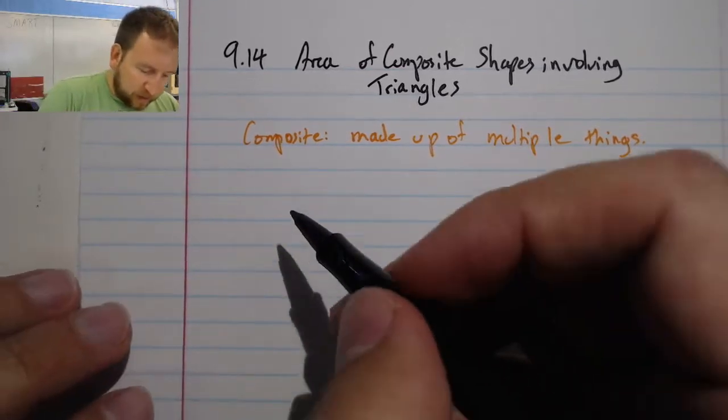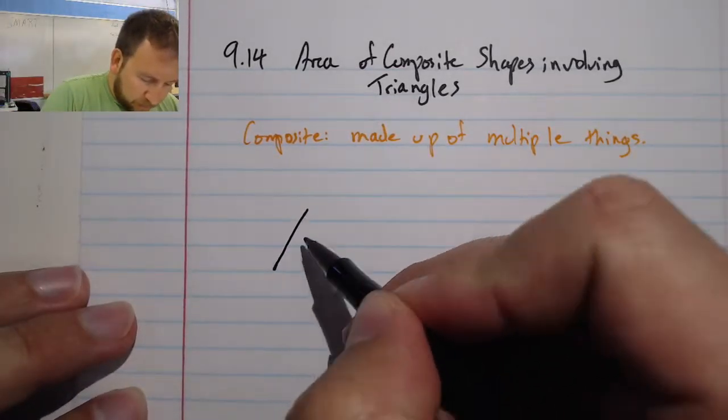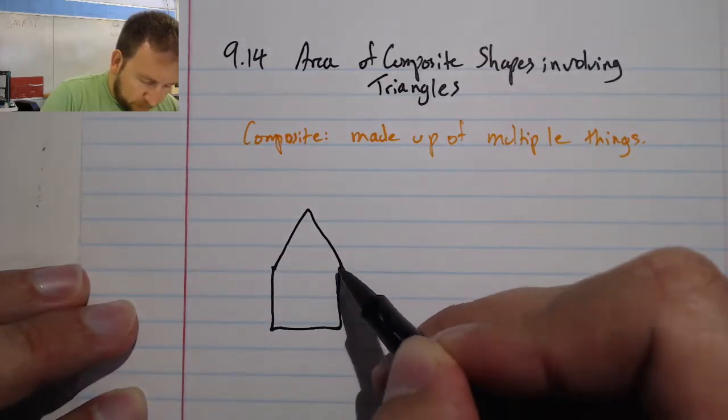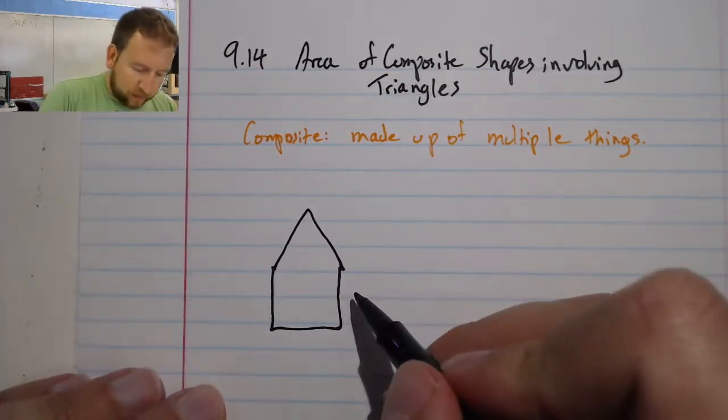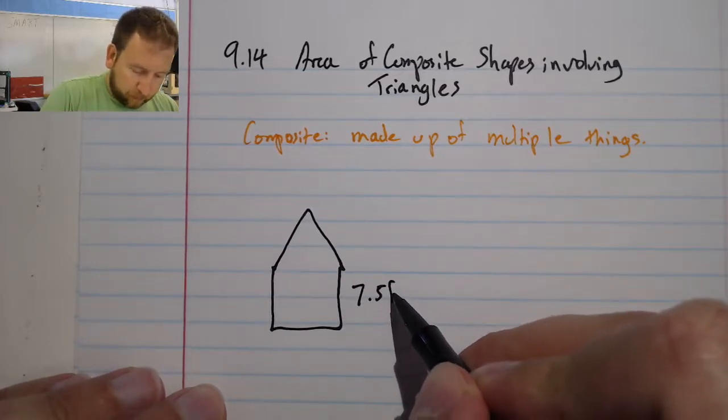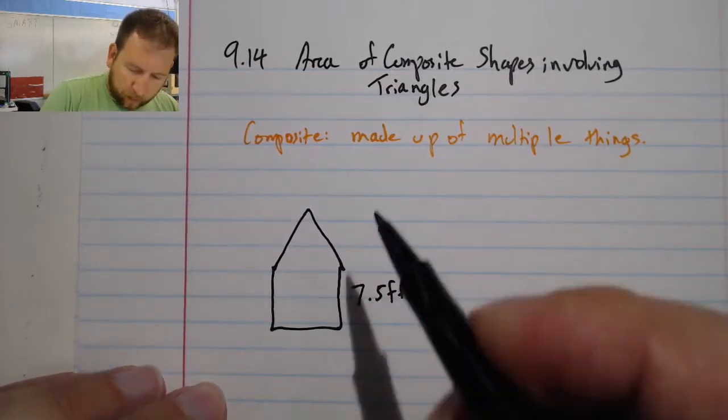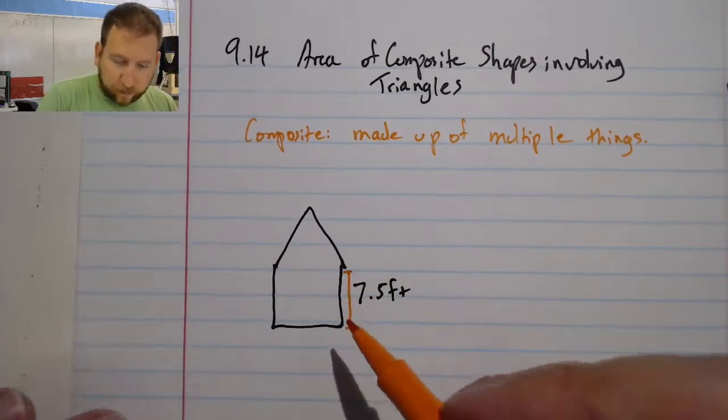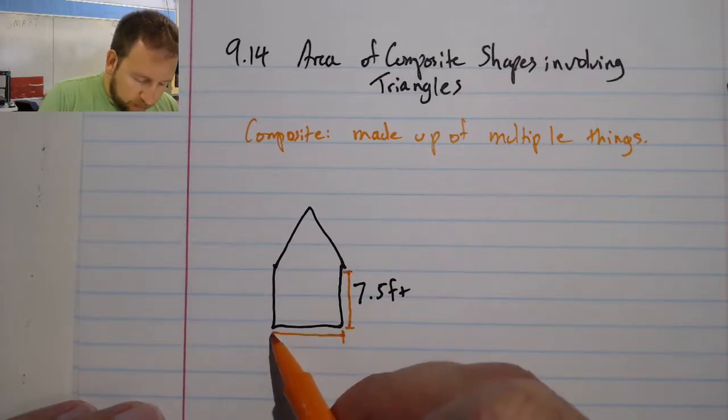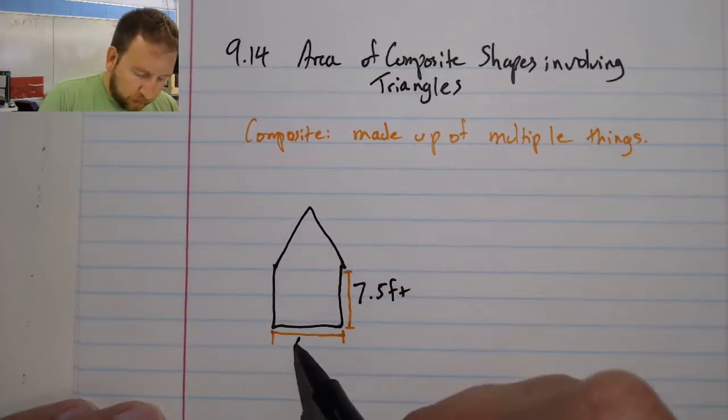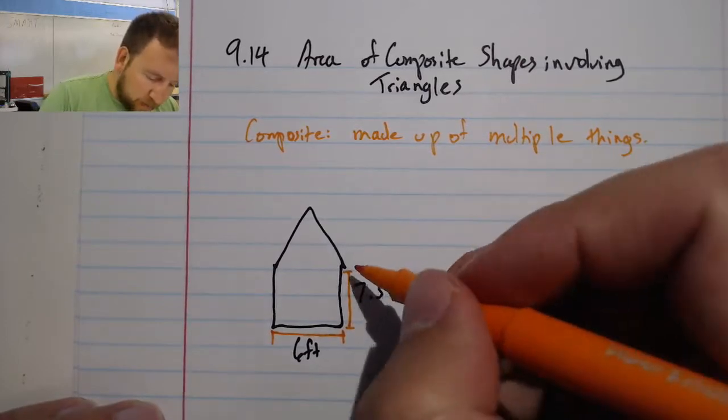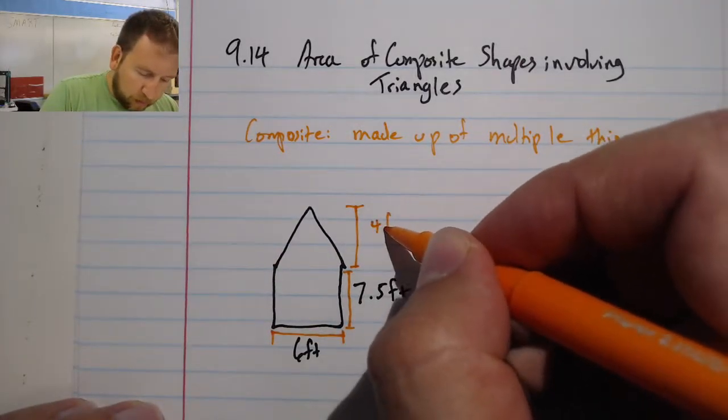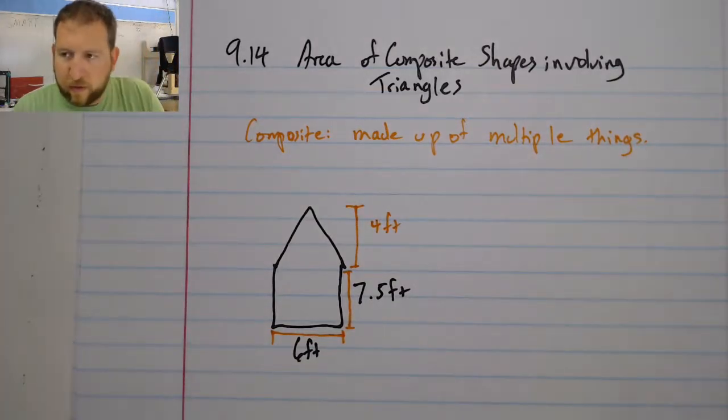Let's take a look at this first example. And we have like the side of a barn here. The side of a barn kind of looks like this. This right here, from here to here is about 7.5 feet. From here to here is 6 feet. And from here to here is 4 feet.